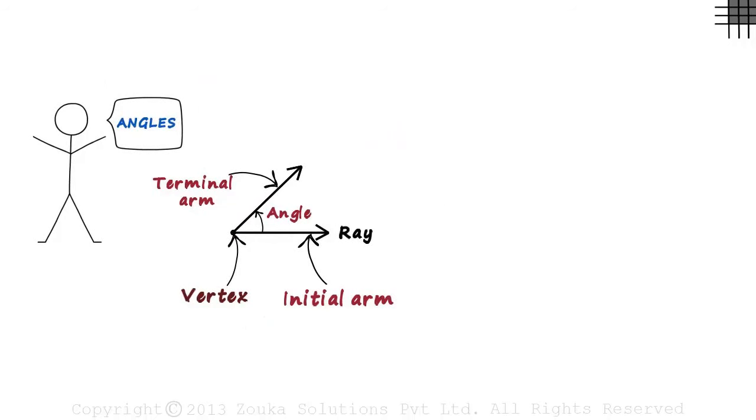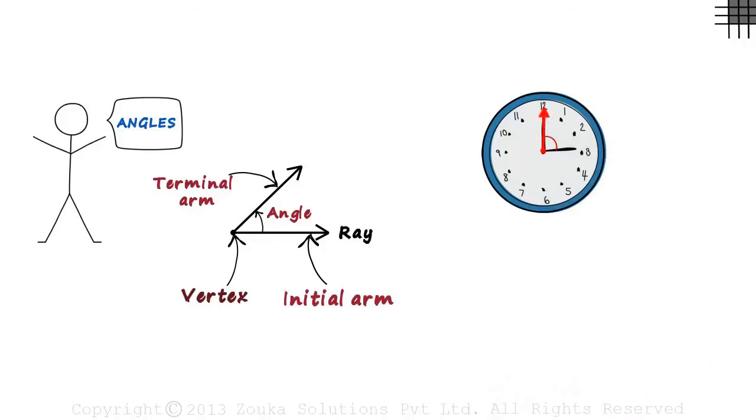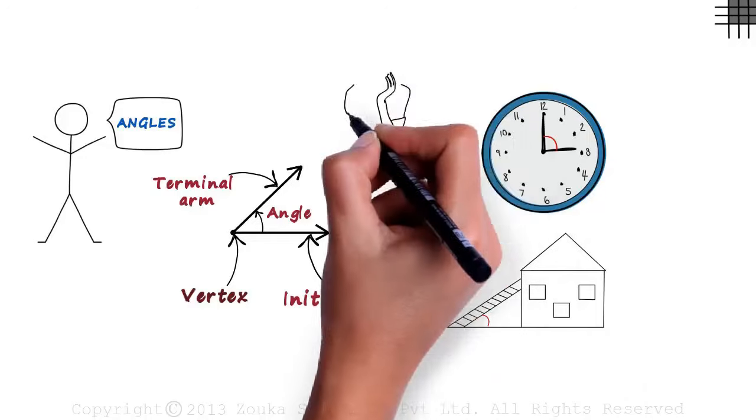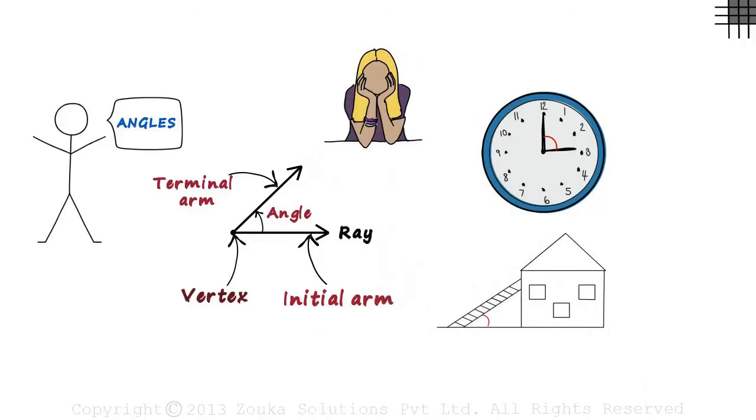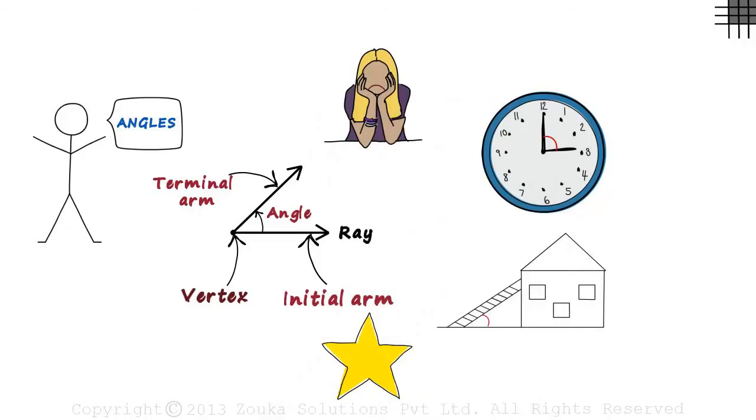Where do we see angles in everyday life? The best example would be that of a clock. An angle is formed between the minute hand and the hour hand. Or maybe this house which has a ladder leaning on it. There is an angle formed by the ladder with the ground. Or look at this picture. There is an angle formed here between her hands. Or this star which has angles inside as well as outside.